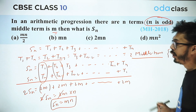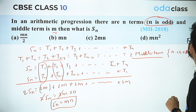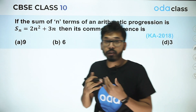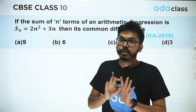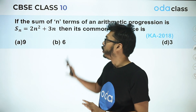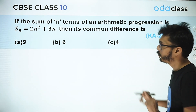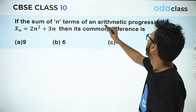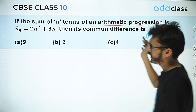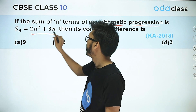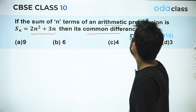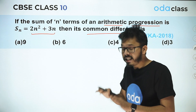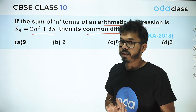Moving on to the next question. Using the additional result I mentioned earlier, I'll make this problem simple. If the sum of n terms of an arithmetic progression is Sn = 2n² + 3n, then what is the common difference?